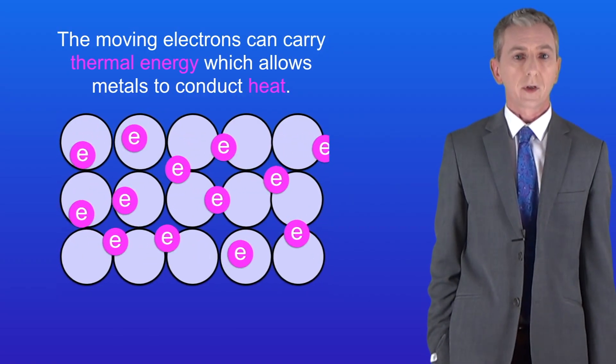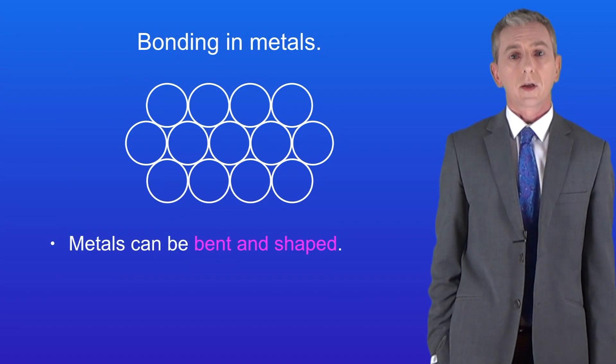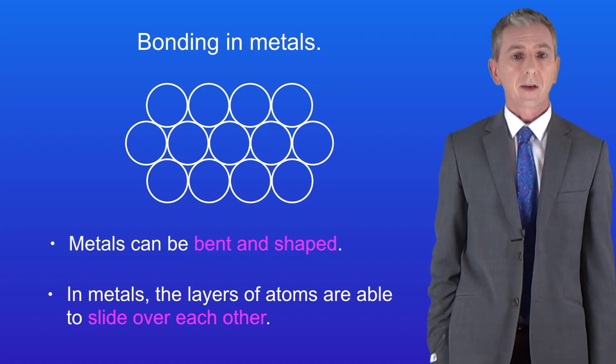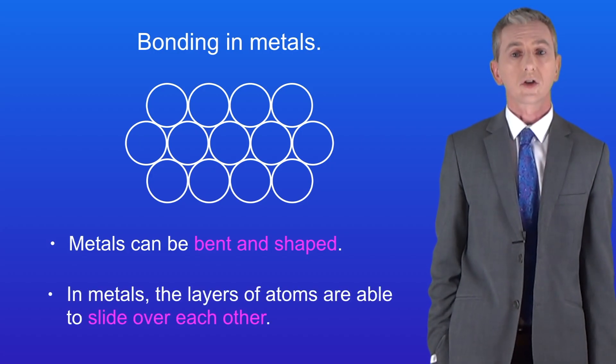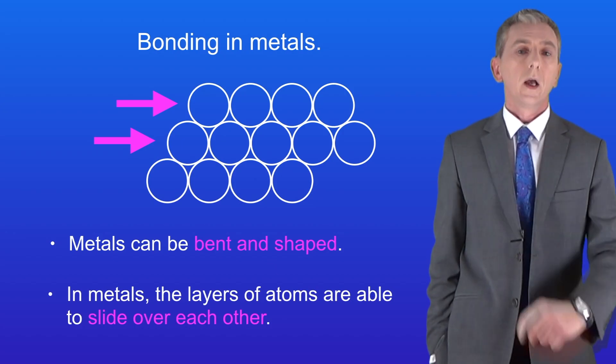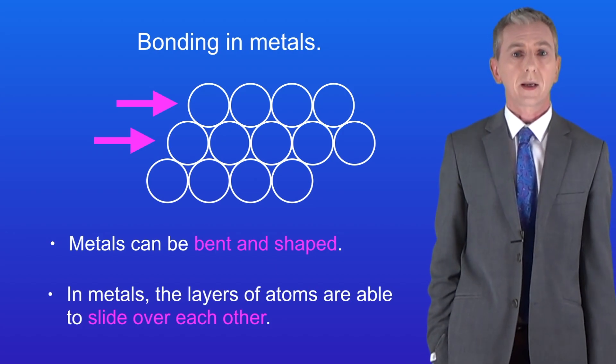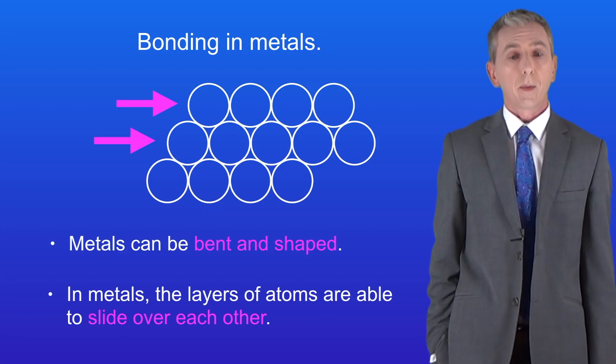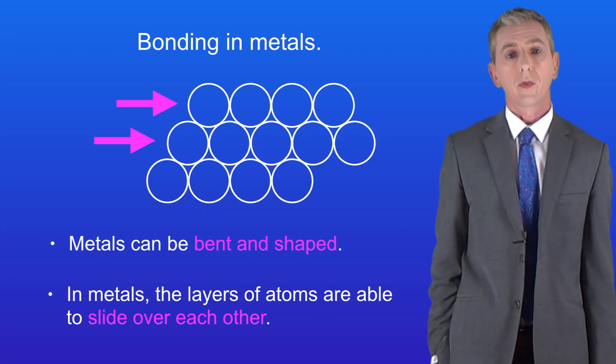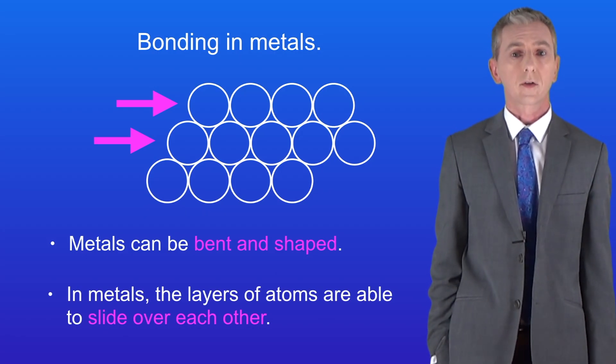Let's look at another property of metals. Metals can be bent and shaped. That's because in metals the layers of atoms are able to slide over each other like this. You really need to learn this, as it's a key property of metals. So just to recap, metals can be bent and shaped, and that's because the layers of atoms can slide over each other.